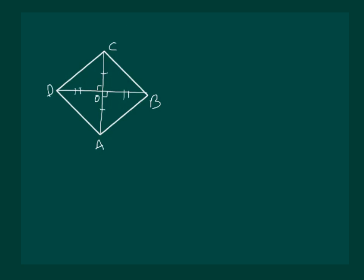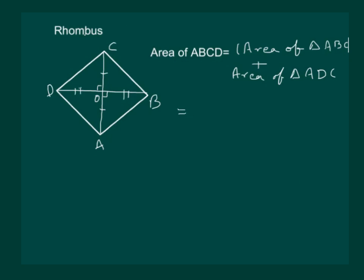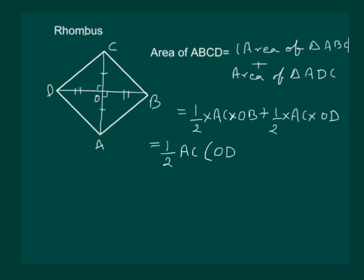Now let us calculate the area of the rhombus. Area of abcd equals area of triangle abc plus area of triangle adc, which equals half times ac times ob plus half times ac times od. Taking out half times ac as common, we are left with ob plus od, which equals half times ac times bd, since od plus ob makes bd.